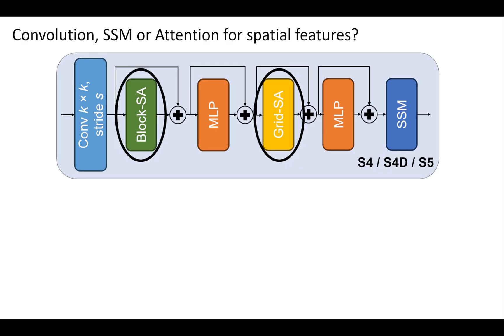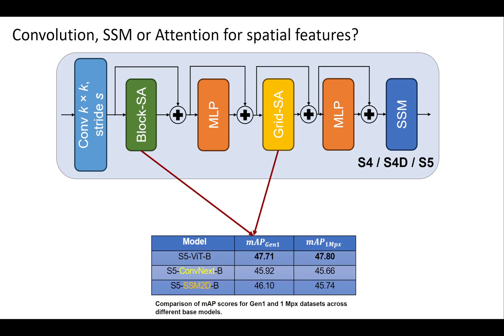We experimented with replacing spatial processing transformer blocks with ConvNeXt and SSM blocks. The observations show that SSM with spatial attention processing yields the best results, followed by pure SSM, while SSM combined with ConvNeXt performs the worst.